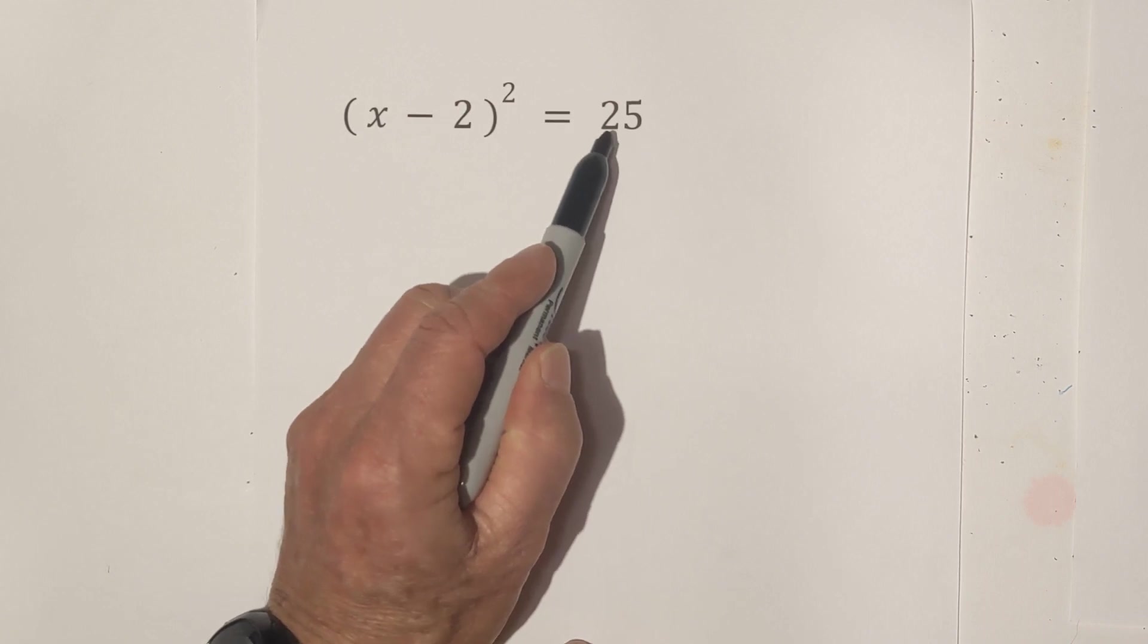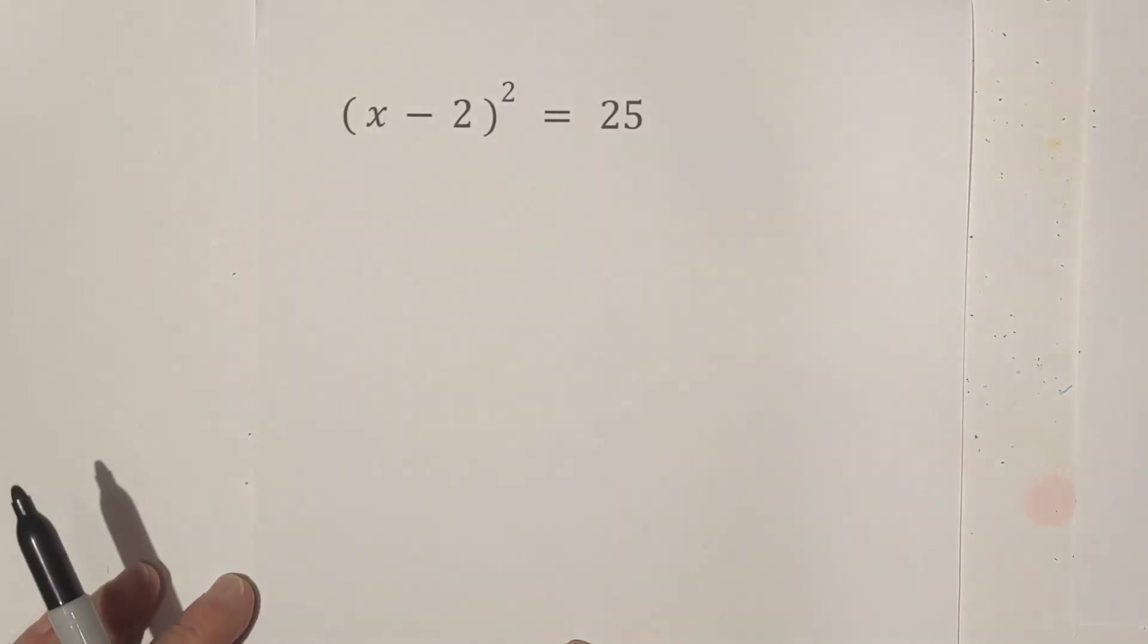This first one, I know 25 is a perfect square, so let's work through this.